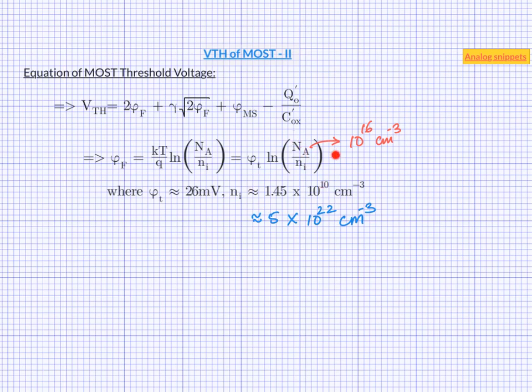When we take N a as the carrier concentration of a doped silicon, it is a very good approximation. It is important to remember that this value of N i is at room temperature. N i is actually a very strong function of temperature, which we will consider later. Now let us calculate the value of phi f for a few values of N a.